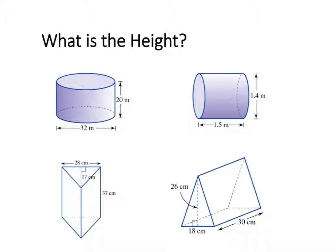For my first shape, the cylinder, the base is going to be along the bottom, so the height is running from the base up to the top. The base and the height don't change even if the shape is laying on its side. Looking at my second cylinder, the base is going to be the circular end and the height is running along the bottom. So even though the cylinder is rotated 90 degrees, the base and the height are still in the same spots, just also rotated 90 degrees.